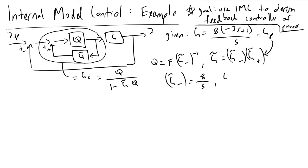and G tilde plus is equal to this unstable part, or the numerator dynamics, which is equal to minus 3s plus 1. And so if we now look at the denominator of our controller transfer function that we're trying to design,